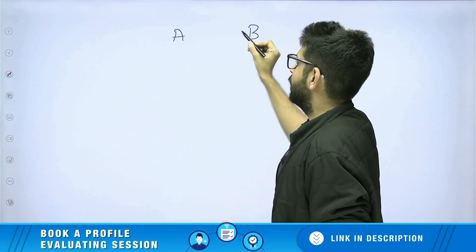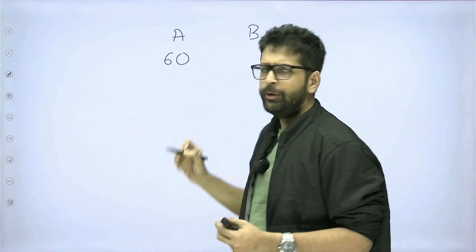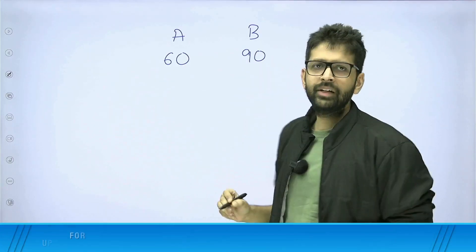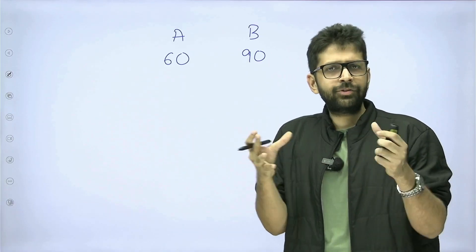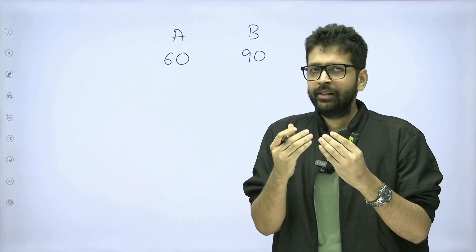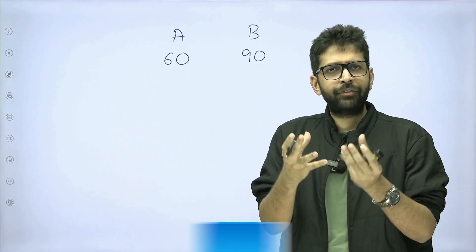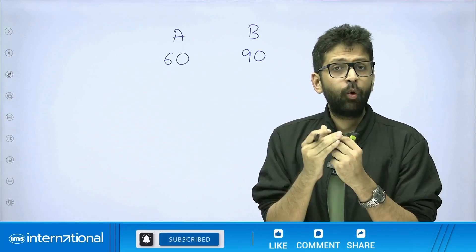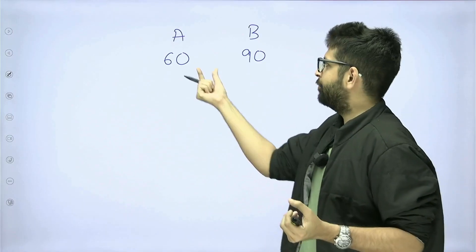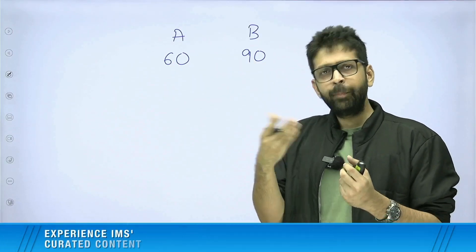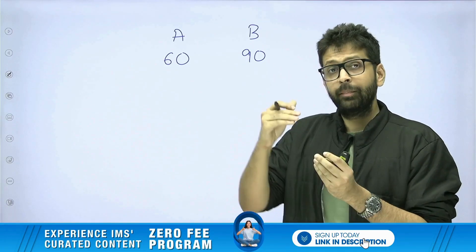Now, what is allegation? I'll try to explain that to you in very simple terms. Let's say there are two brands of rice. Brand A is costing 60 rupees per kg and brand B is costing 90 rupees per kg. There is this vendor who is buying both these brands and is trying to mix both of them so that the price comes down. If we are mixing two brands, the price is obviously going to be lesser than the highest price and more than the lowest price. So if I mix 60 and 90, the new price is going to be somewhere between 60 and 90.